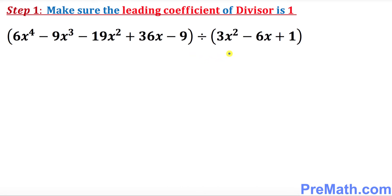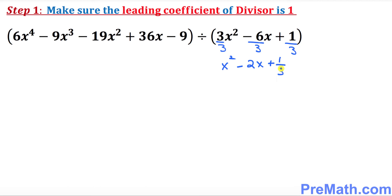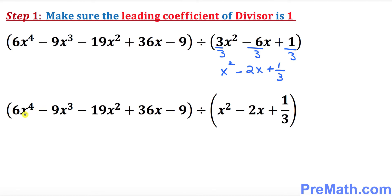In step one, we want to make sure that our divisor has a leading coefficient equal to 1, but here it is 3. We can make it 1 by dividing by 3. If we divide it by 3, we divide the other terms by 3 as well. So 3 over 3 is simply 1, and this becomes x squared minus 2x plus 1 over 3. So this problem is going to look like this.